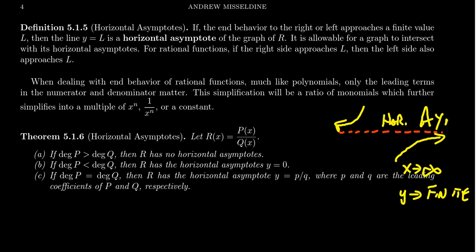The graph will start approaching some horizontal line as you go to the far left and the far right. This is going to be an approximation of what happens to our function as x gets really, really big — on the far left or on the far right. So this is really measuring the end behavior of our rational function.